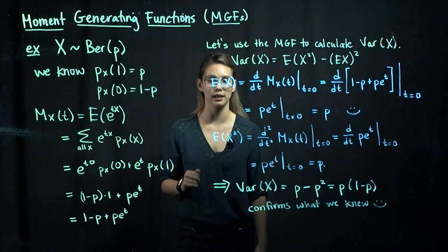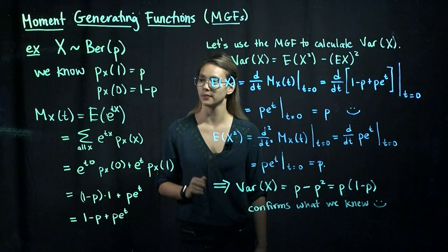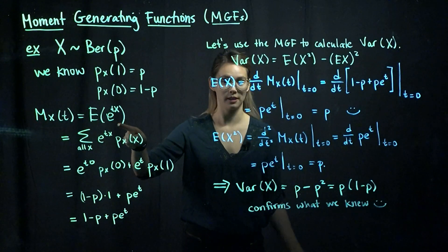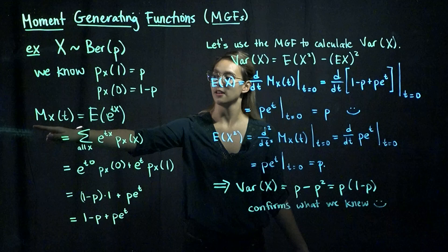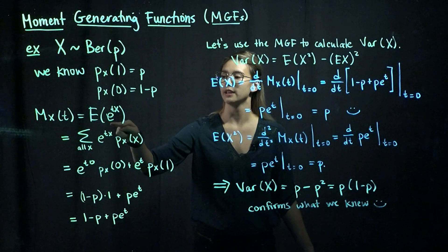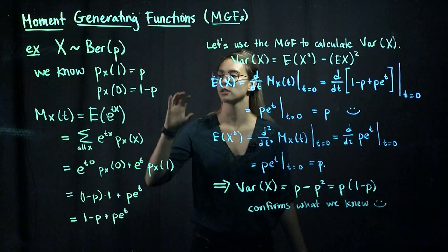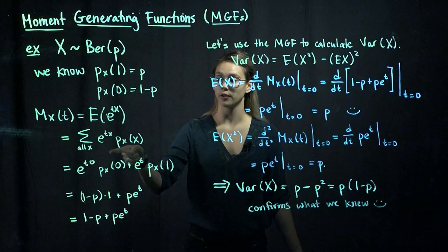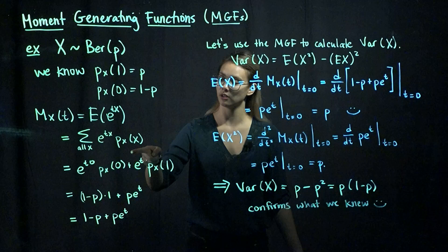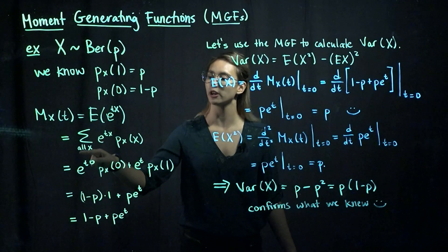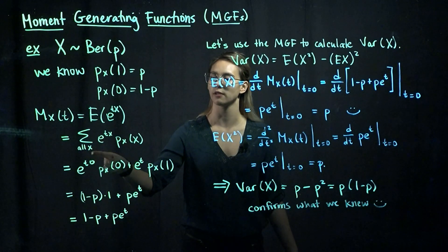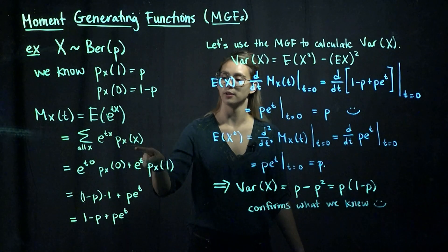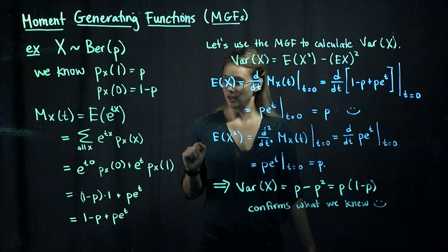Let's start off by calculating our moment generating function. For any random variable x, assuming that this expectation exists, our moment generating function is the expected value of e to the tx. In the discrete case, when x is a discrete random variable, we're taking a sum over all values of x of e to the tx times the PMF, so p sub x of x.